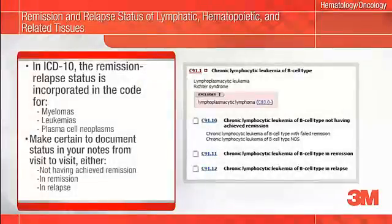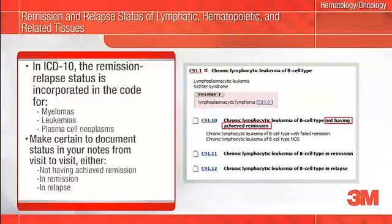What else is new is that the remission/relapse status of myelomas, leukemias, and plasma cell neoplasms have been incorporated into the code at the fifth character. For example, the character '2' in code C91.12 identifies chronic lymphocytic leukemia of B-cell type in relapse. You will have to make certain that the patient's remission/relapse status is clearly indicated in your documentation, as either not having achieved remission, in remission, or in relapse. This is especially important to clarify or restate the patient's current status from visit to visit. Remission/relapse status is used as a predictor for long-term survival and provides important information when analyzing the efficacy of treatment.